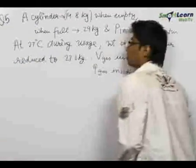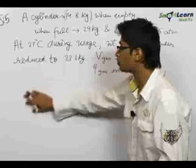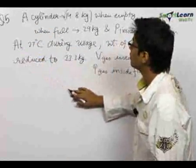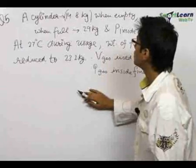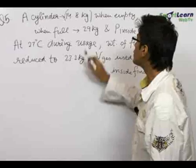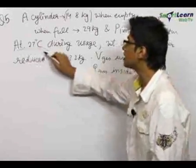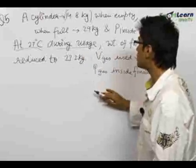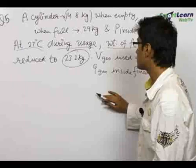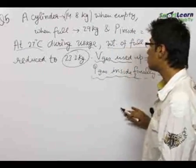Question five is a very important and highly conceptual problem. Students tend to make some mistakes which we will try to avoid. We have a cylinder which weighs 14.8 kilograms when empty. When it is full with a gas it weighs 29 kilograms and the pressure inside is equal to 2.5 atm at 27 degrees centigrade. During usage, the weight of the full cylinder reduced to 23.2 kilograms. We want to find the volume of gas which has been used up and the final pressure of gas inside the cylinder.